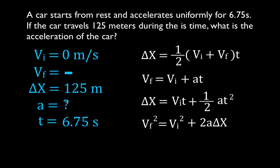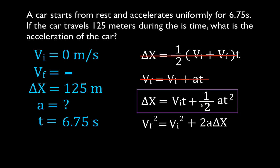Get out your kinematic equations and choose the correct one. It has to have the acceleration in it and the other three known variables. The first equation still has no acceleration. The second equation has acceleration but also has final velocity, which we don't know, so we cannot use that equation. The next equation does have acceleration. We know the change in position is 125 meters, we know the initial velocity is zero, and we know the time — so this is the equation we're going to use. The last equation also has final velocity, which we don't know, so we could not use that one either.